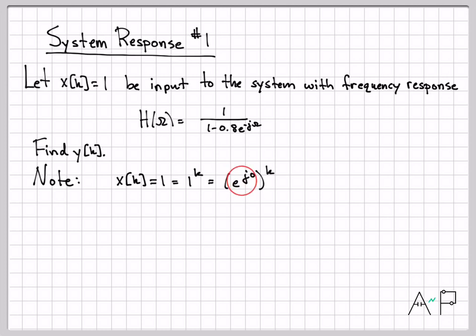So actually, this way of writing one, it's kind of a very strange way of writing one. But it makes it very clear that the number one is actually a complex exponential that has a frequency of zero.